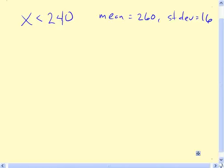In this problem, we're asked to determine the proportion of pregnancies that last less than 240 days. We're told that the length of pregnancies are normally distributed with a mean of 260 and a standard deviation of 16 days.